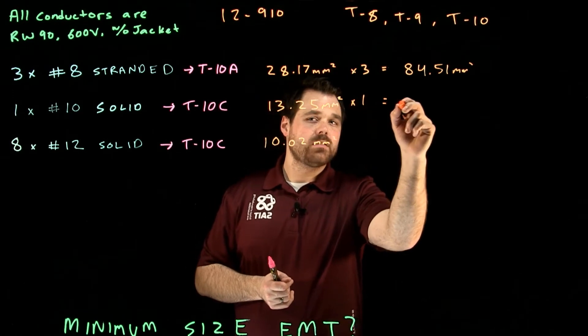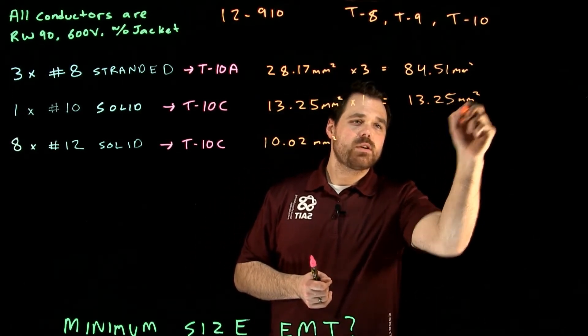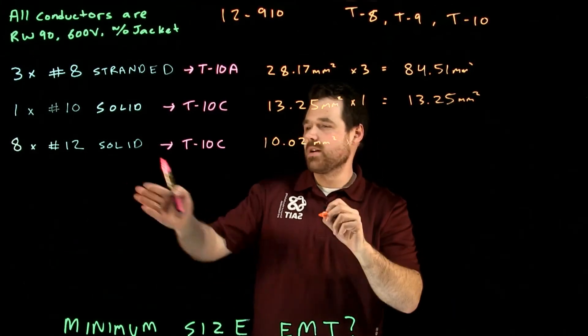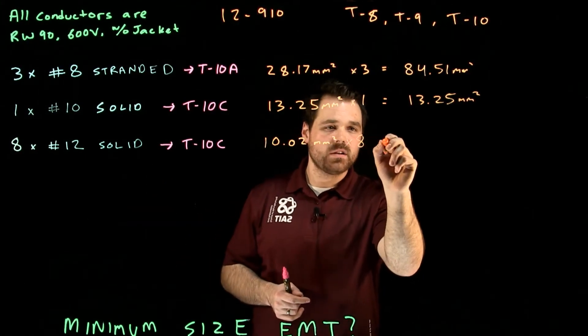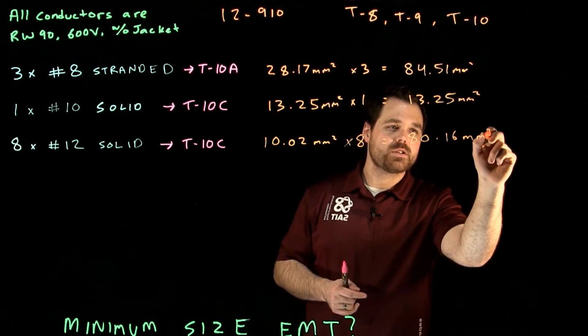This is just multiply by one, 13.25 millimeters squared. And this, we have eight of them. So we multiply by eight gives us 80.16 millimeters squared.